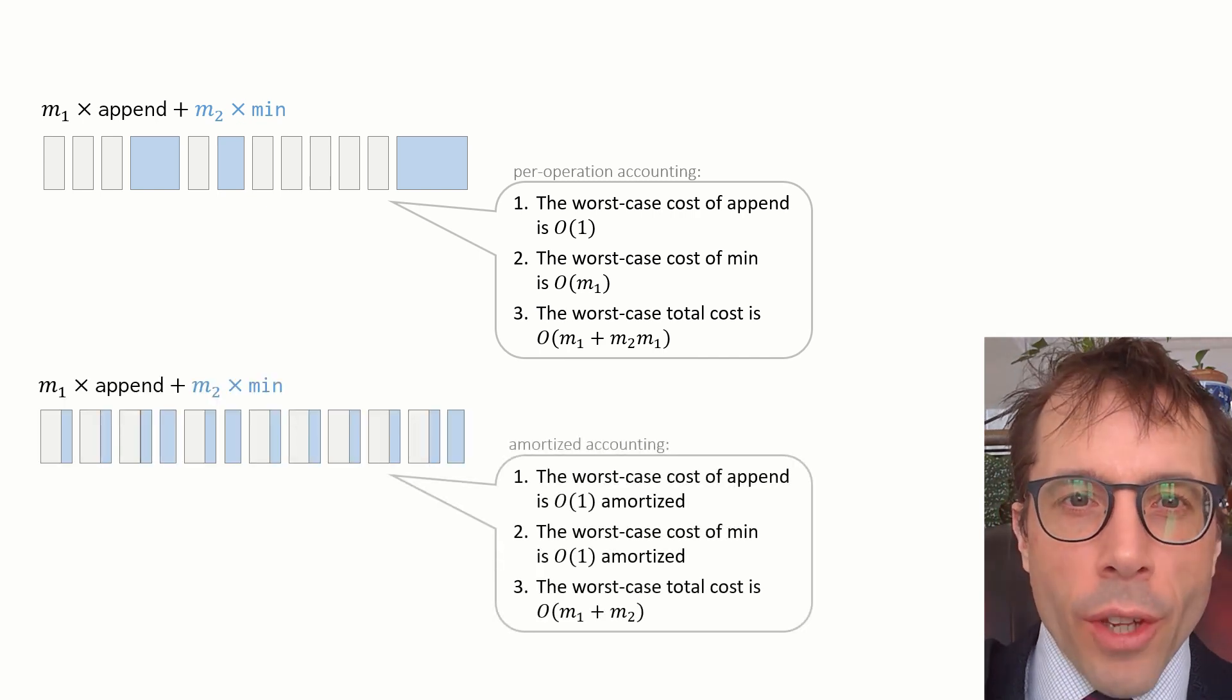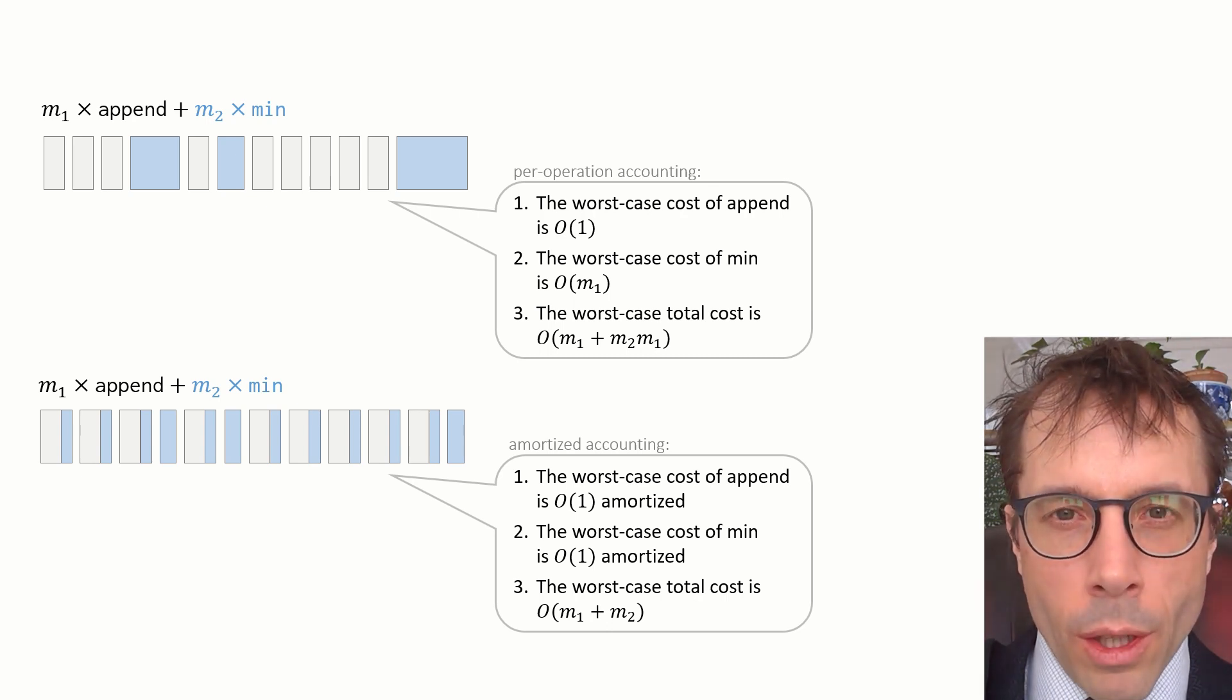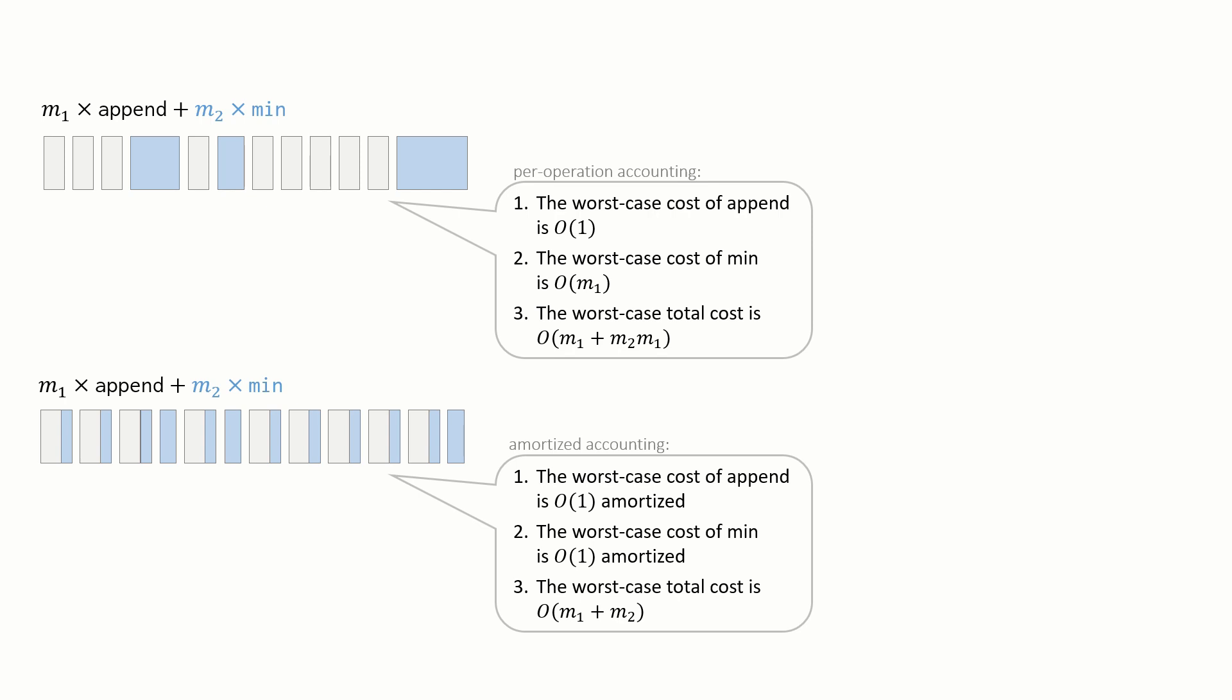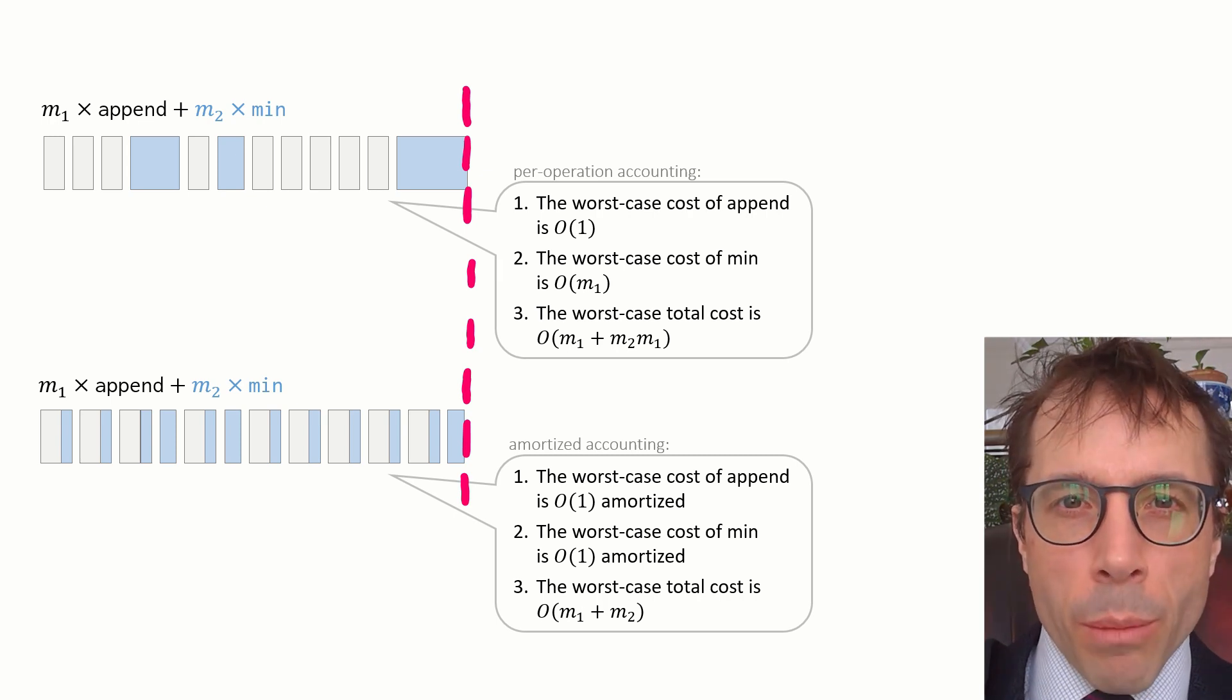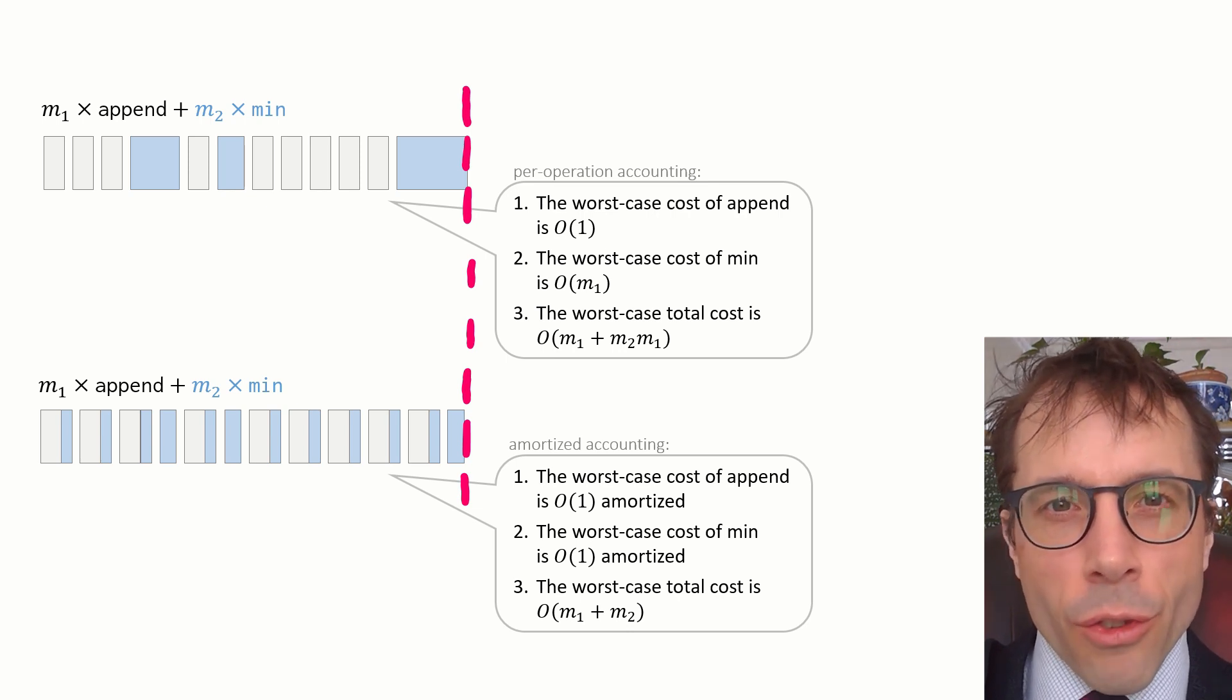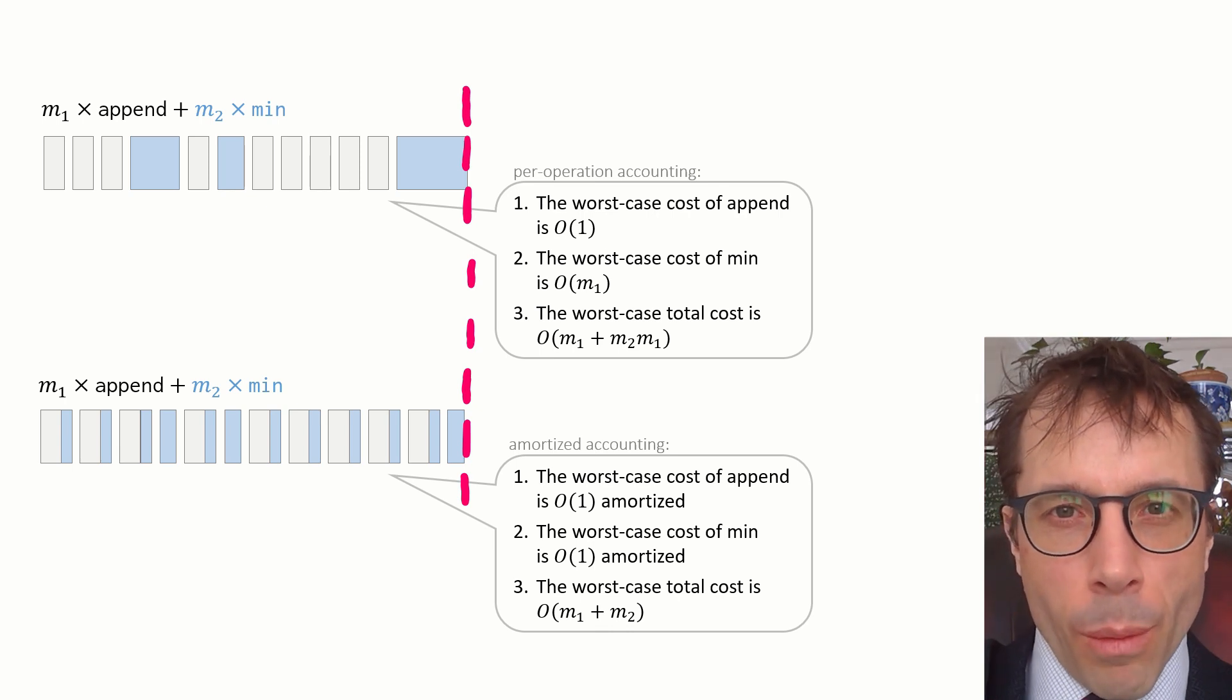And here's how the same analysis would go with amortized costs. Again, pause the video and have a read. The big thing to stress once again is that amortized analysis is just an accounting trick. It's a way of ascribing costs differently and it doesn't change the total running time. That's why I'm allowed to just add up the amortized costs to get the total cost of this entire sequence of operations.